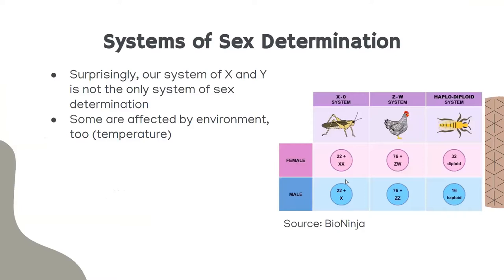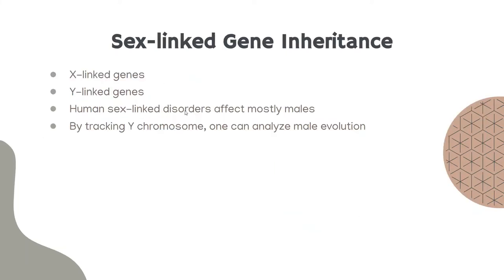Number six: sex-linked genes. We are familiar with the XY sex determination system, but it's not the only one. Some systems are affected by environment — such as temperature. Other systems include the XO system (female XX, male X), the ZW system in chickens (female ZW, male ZZ), and the haplo-diploid system where females are diploid and males are haploid. Some reptiles have sex determined by the temperature at which the egg hatches.